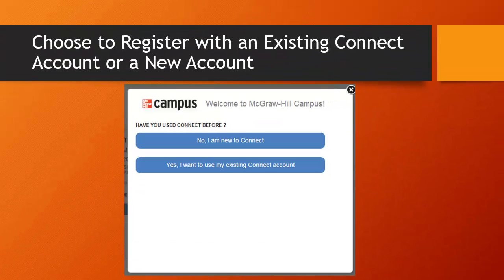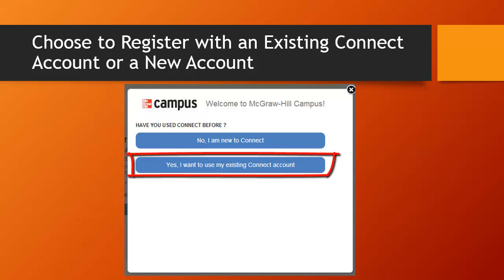Now, you can either register for a new Connect account or use an existing Connect account. If you used Connect previously in the fall or spring semester for a class, your account is still active and you can use it for this new class as well. Just click Yes, I want to use my existing Connect account and log in using the same login email address and password you used previously.